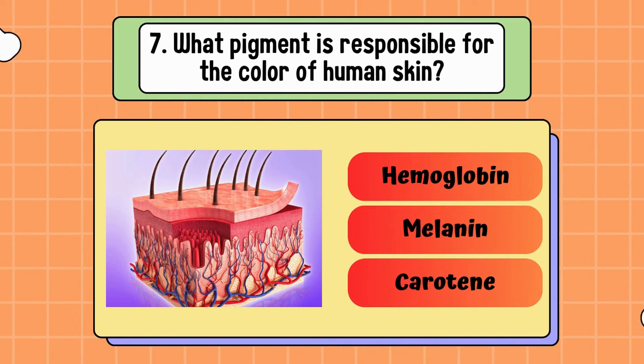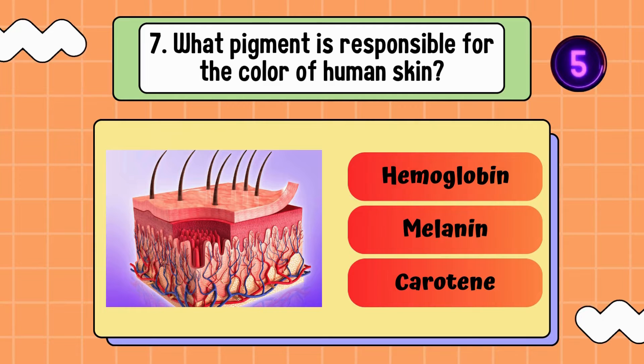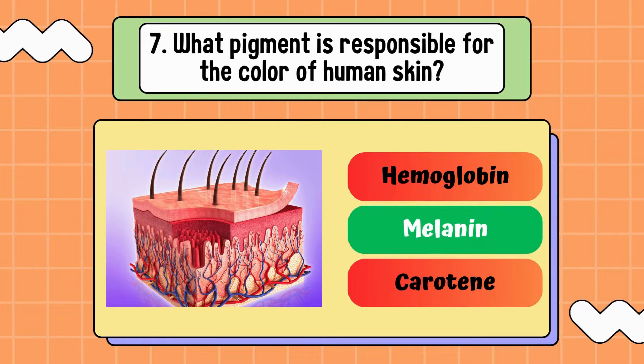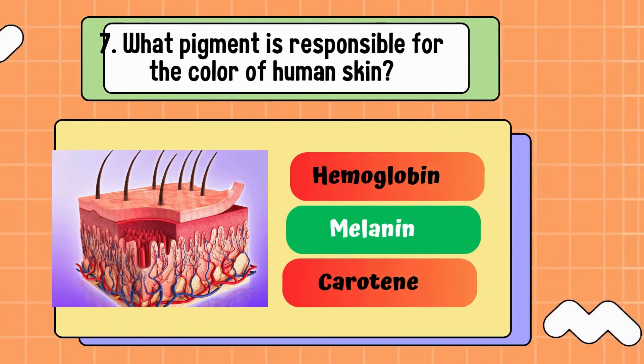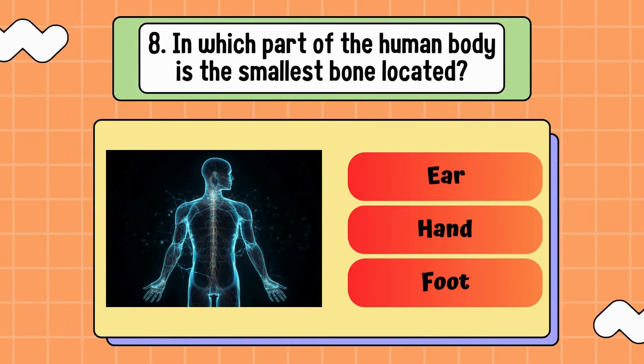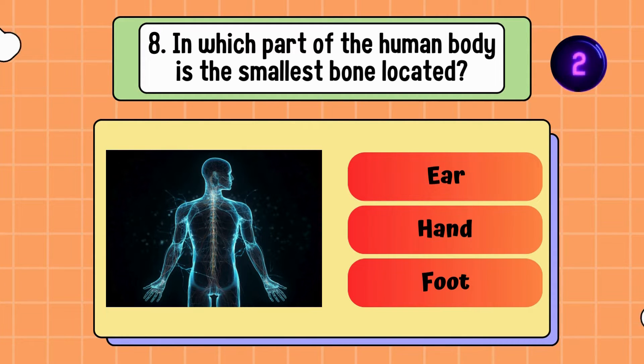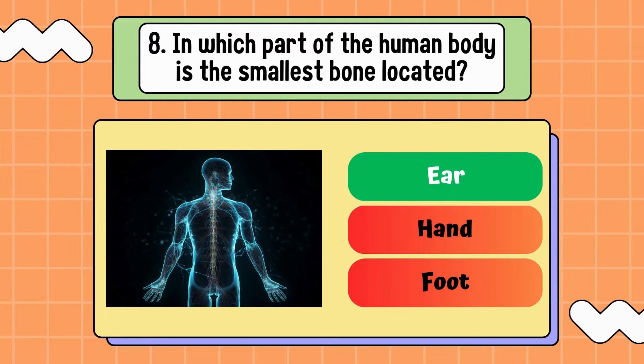What pigment is responsible for the color of human skin? Hemoglobin, melanin, or carotene? Answer is melanin. In which part of the human body is the smallest bone located? Ear, hand, or foot? Answer is ear.